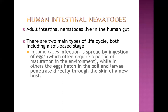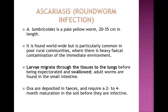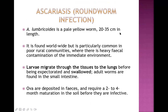First we'll cover Ascaris, second hookworm. Ascariasis, or roundworm infection — roundworm is the common term for all types of nematodes, but is most commonly used for Ascariasis. Ascaris lumbricoides is a pale yellow worm about 20 to 35 centimeters in length. The female Ascaris worm can be quite longer.